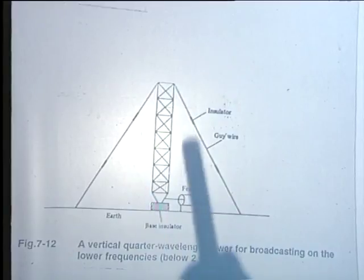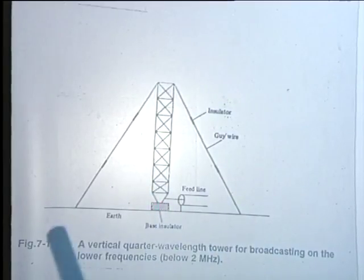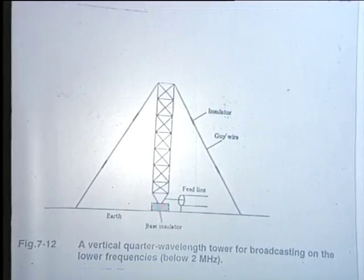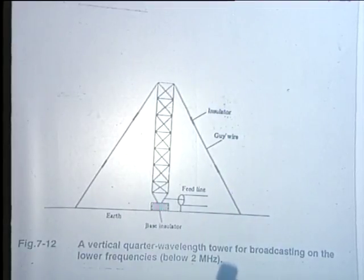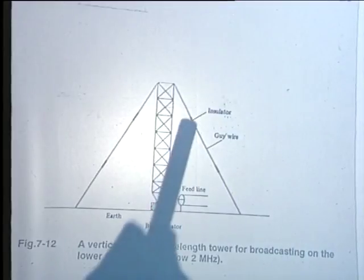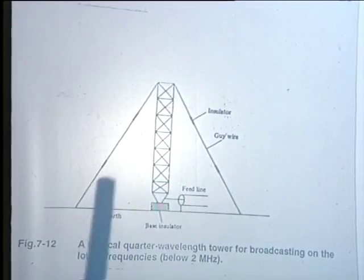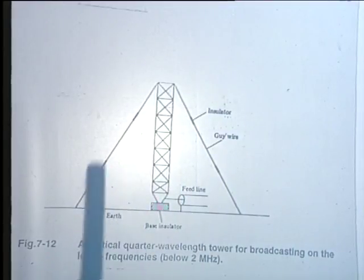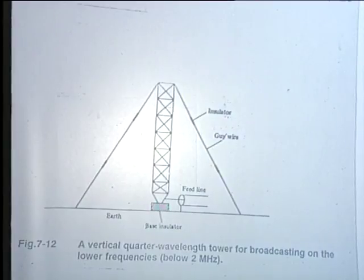It is insulated from the ground and is fed by a coaxial conductor. Because of the size of the structure, it will have to be supported with the help of guy wires. So that induced currents on these guy wires do not corrupt the radiation pattern and the other properties, there are insulators inserted at regular intervals on these guy wires themselves.